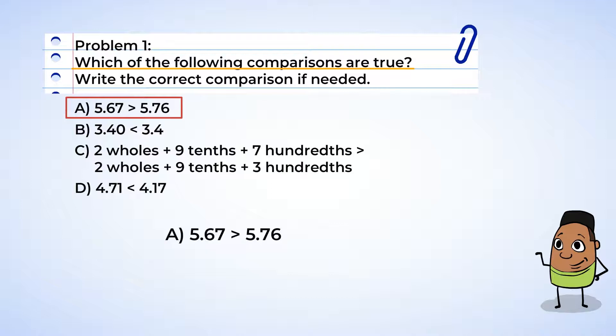5 and 67 hundredths is greater than 5 and 76 hundredths. The ones are the same, so we look at the tenths. 6 is not greater than 7, so this is false. Aha, and we're going to need to change the sign. 5 and 67 hundredths is less than 5 and 76 hundredths. Alright!